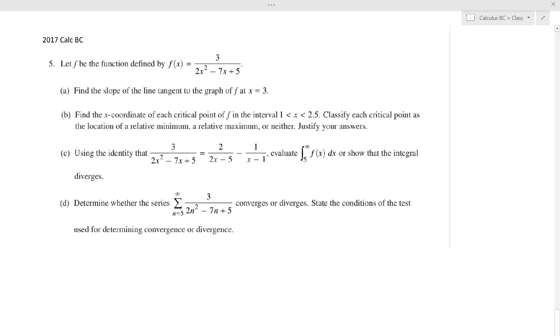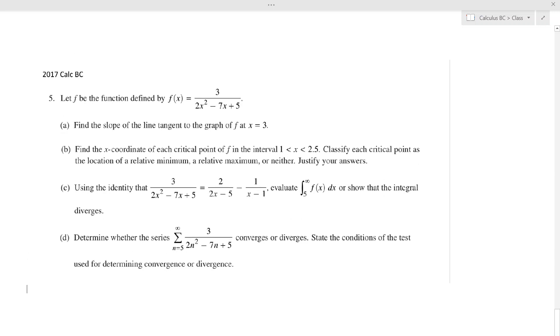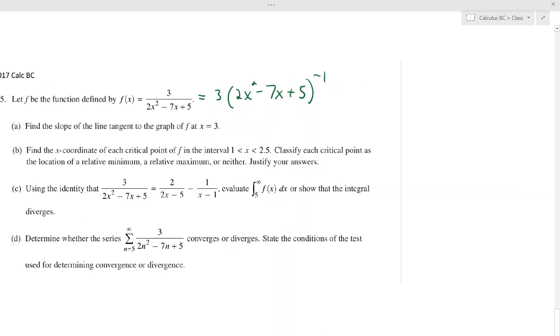All right, so given this function, find the slope of the tangent line at three. That's just the derivative. When you have to derive this, keep in mind you can do the quotient rule if you want. I'd recommend against it. That's the same thing as that, right? So the slope of the tangent line of f at three, which they can't really give you a question like that this year because you're going to have a calculator the whole time. But we got to find f prime of x.